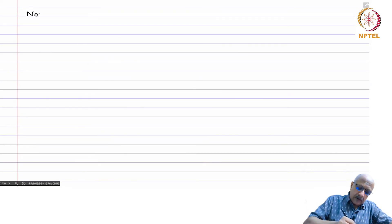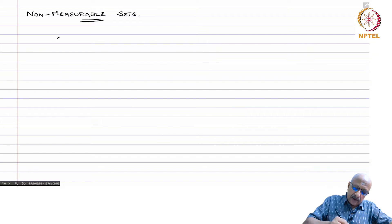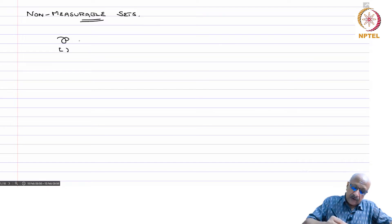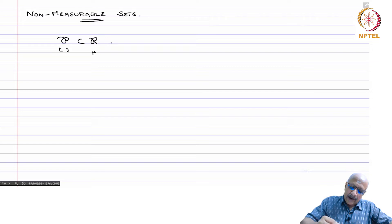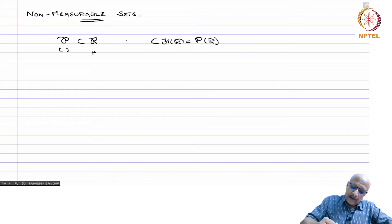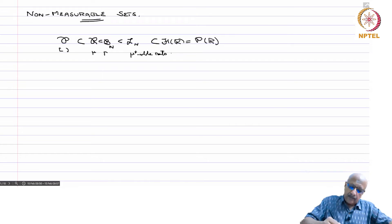We will now talk about non-measurable sets. Recall how we constructed the Lebesgue measure: we had P consisting of all finite unions of half-closed intervals, then we constructed a ring out of it. On this we had a measure mu, and then we went to the hereditary sigma-ring H, which is the power set of the real line. Then we had the mu-star measurable sets, which are the Lebesgue measurable sets, and the Borel measurable sets.